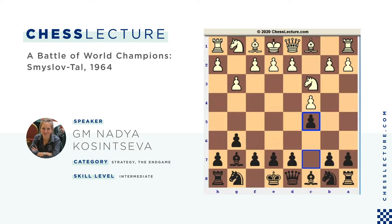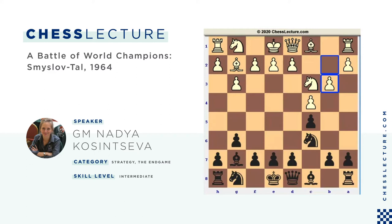White continues with Bg2, Nc6, and b3. One more time white tries to avoid main lines and just develops the pieces. He wants another bishop to go to the long diagonal and has not castled so far. One idea behind this setup is that maybe white does not want to castle at all — sometimes white keeps the king in the middle and plans to attack black on the side by pushing pawns forward.